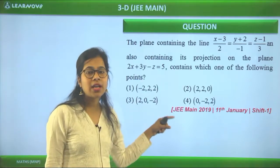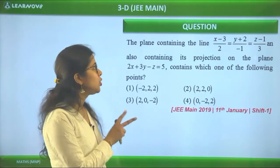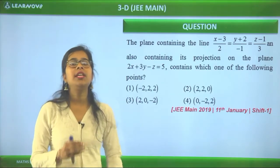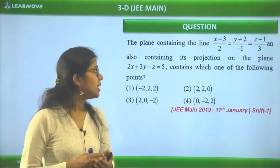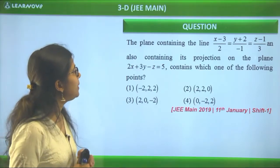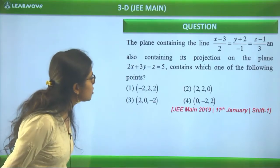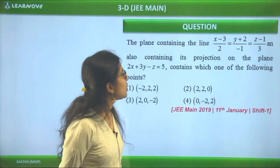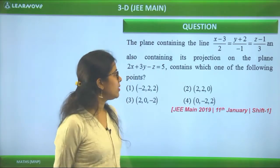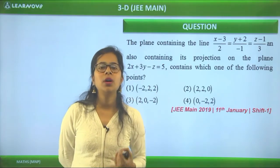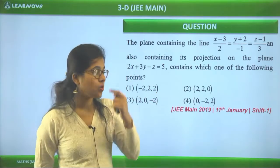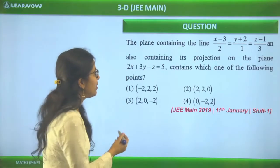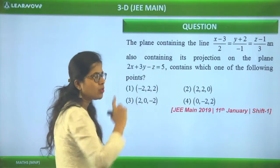Moving to the next question, also from 11th January Shift 1 — two questions appeared from 3D in that shift, since it was 2019 when 30 questions were asked. The question: The plane containing a given line and also containing its projection on another given plane — which of the following points does it contain?